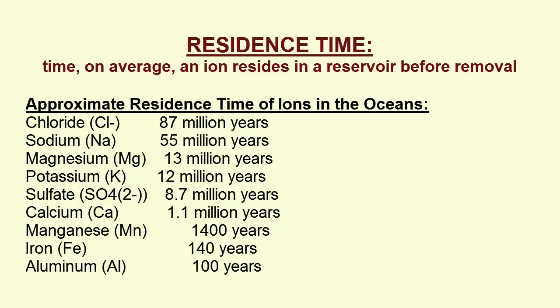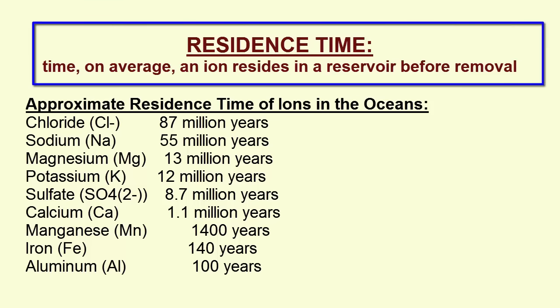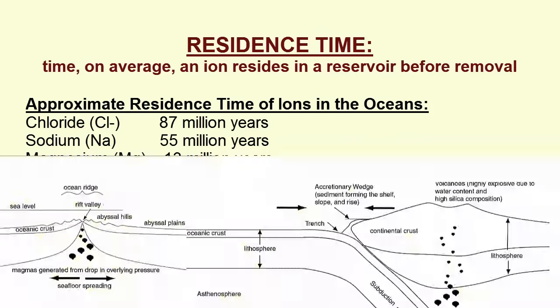Here is a table of the residence times for a few ions that can be found dissolved in the ocean. Remember from the first part of this class, we defined residence time as the length of time an ion, atom, or molecule resides in a reservoir on average before it is removed. In this case, the reservoir is the ocean. Ions arrive through a variety of sources and are removed primarily through precipitation and sedimentation.